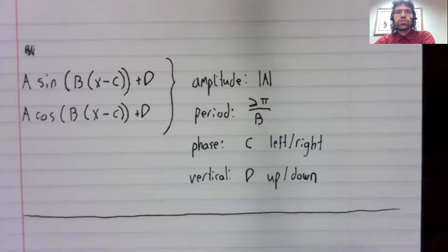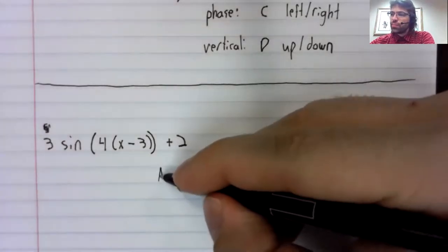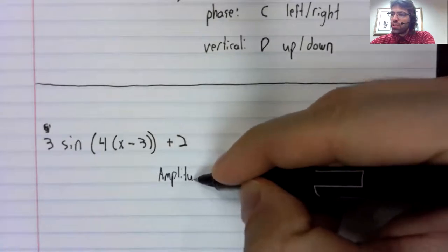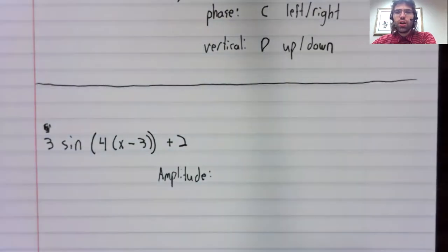Let's look at an example. Here's a sinusoidal function. And let's read these properties off.